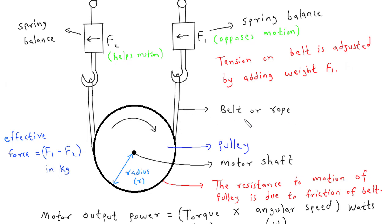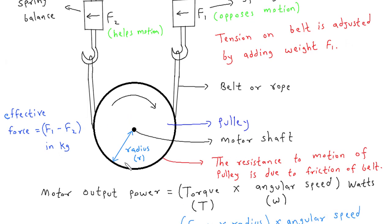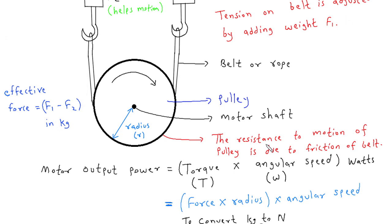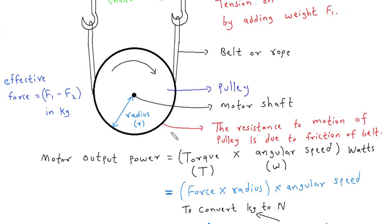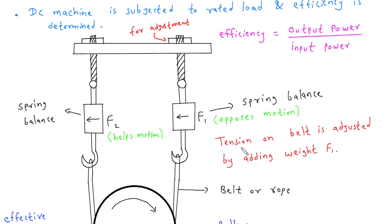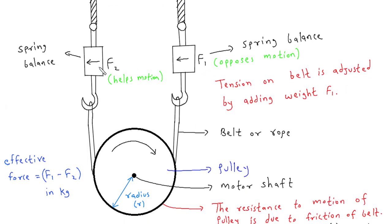Here we can see this is belt or rope. It is connected to the pulley, and this is the motor shaft. This is the radius of this pulley. The resistance to motion of pulley is due to friction of belt. Here the power loss is due to this friction. Tension on belt is adjusted by adding weight F1. We can add weight here or rotate this wheel for increasing the tension on belt. These weights are in kilograms.